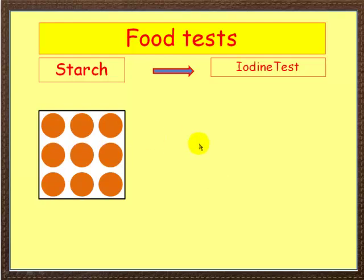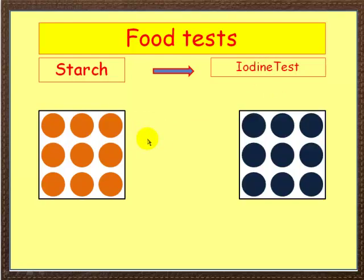For starch, we test using iodine. Iodine is normally a yellowy-brown colour, but if you add it to starch it goes bluey-black. So the positive result for starch is a blue-black colour.